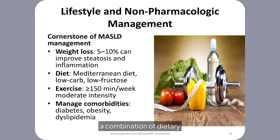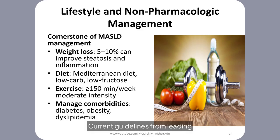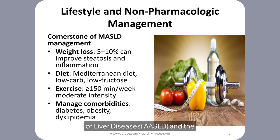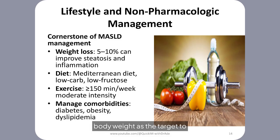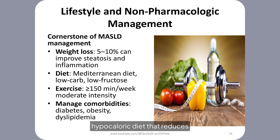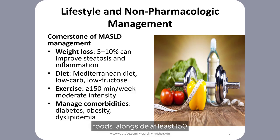Lifestyle management of MASLD is foundational and focuses primarily on weight loss through a combination of dietary modification, increased physical activity, and behavioral changes. Current guidelines from AASLD and EASL emphasize a gradual weight loss of 7 to 10% of body weight as the target to significantly reduce liver fat, inflammation, and fibrosis. This is typically achieved via a hypocaloric diet that reduces saturated fats and simple sugars, while increasing fiber and whole foods, alongside at least 150 minutes per week of moderate-intensity aerobic exercise.